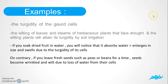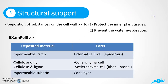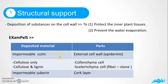That's all about physiological support. What about structural support? Structural support has two main jobs: to protect the inner plant tissue and to prevent water evaporation. This is done by the possession of substances on the cell wall — always hard or impermeable materials. We have two types of impermeable materials: impermeable cutin, found in the external cell wall called the epidermis, and impermeable suberin, found in the cork layer of the plant.